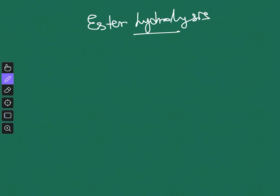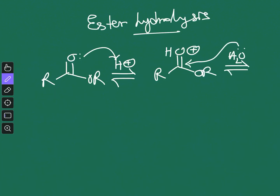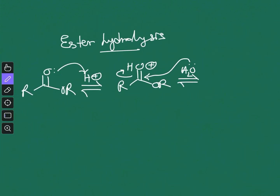The first acid-catalyzed mechanism: the ester's carbonyl oxygen has a high-energy lone pair that easily takes a proton to give an activated carbonyl compound. A water molecule present in the reaction medium then attacks this activated carbonyl to give an intermediate with OH₂⁺, OH, and OR.